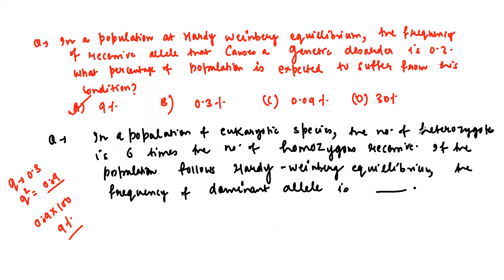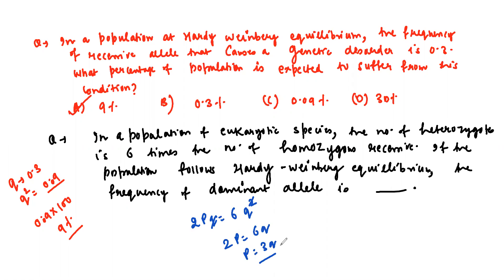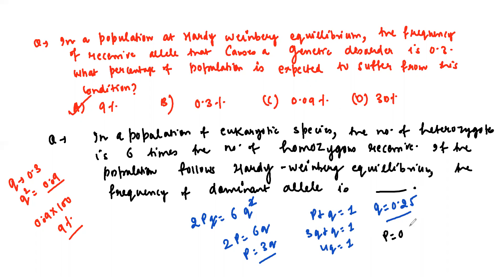In a population of eukaryotic species, the number of heterozygotes is 6 times the number of homozygous recessive. So 2pq = 6q². This gives p = 3q. Since p + q = 1, 3q + q = 1, so 4q = 1, q = 0.25. Therefore p = 0.75.